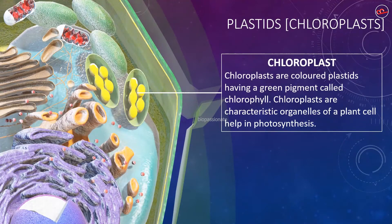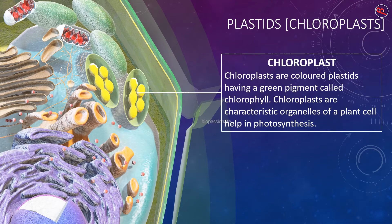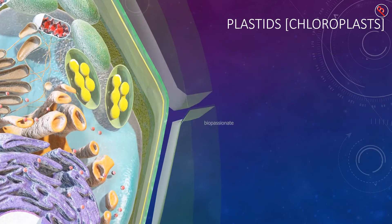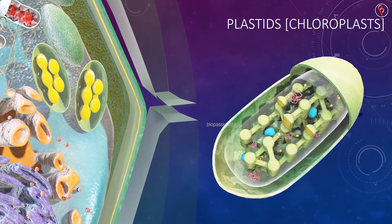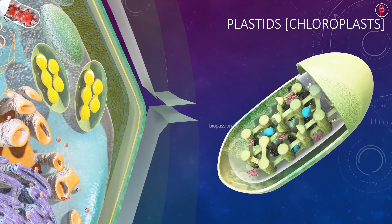Chloroplasts are colored plastids having a green pigment called chlorophyll. Chloroplasts are characteristic organelles of a plant cell that help in photosynthesis.